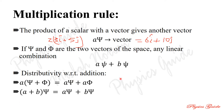The distributive property: if scalar a multiplies the sum of two vectors, the result equals a·psi plus a·phi — scalar times each vector added together. The answer on the left-hand side and right-hand side should be the same. If so, the distributive property holds.